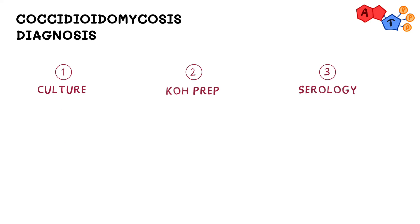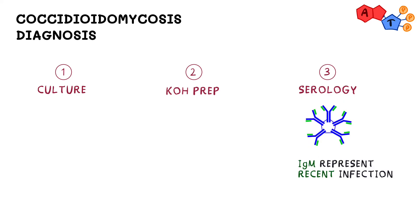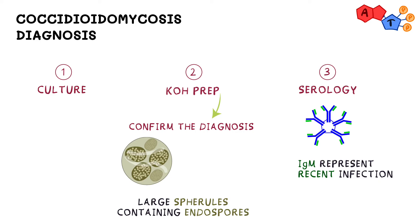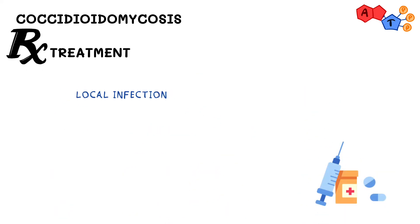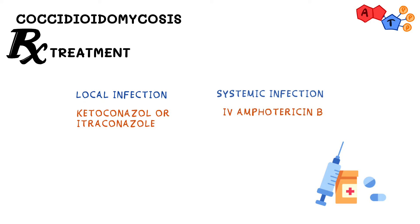You can diagnose coccidioides by sending culture or viewing under potassium hydroxide prep. You can also send serology to look for antibody titers — IgM against cocci represents recent infection. Under KOH prep, the yeast form appears as large spherules containing endospores, which when they rupture can disseminate to different organs. These spherules are bigger in size than RBCs. For local infection, treat with azoles such as ketoconazole or itraconazole; for systemic infection, treat with IV amphotericin B.